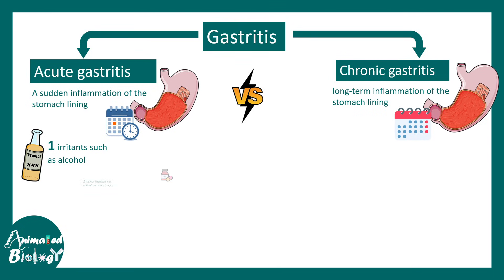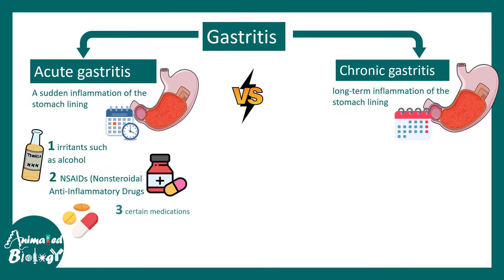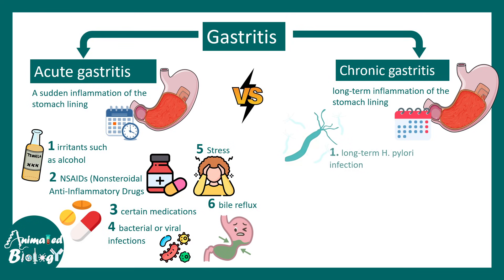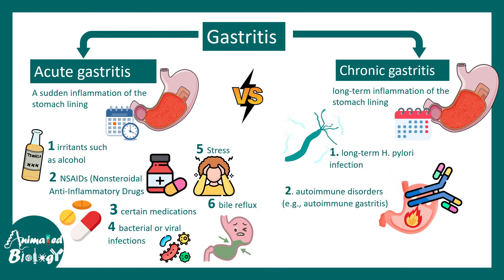Acute gastritis can happen due to irritants such as alcohol, NSAIDs or non-steroidal anti-inflammatory drugs, certain other medications, or bacterial and viral infections. There could also be stress or bile reflux causing short-term inflammation of the stomach lining. Chronic gastritis mostly happens due to long-term H. pylori infection or autoimmune disorders such as autoimmune gastritis.